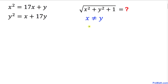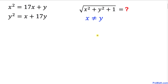Welcome to pre-math. In this video tutorial we have a system of two equations. The first equation is x² = 17x + y, and the second equation is y² = x + 17y. Moreover, x is not equal to y. We are going to find the value of √(x² + y² + 1).